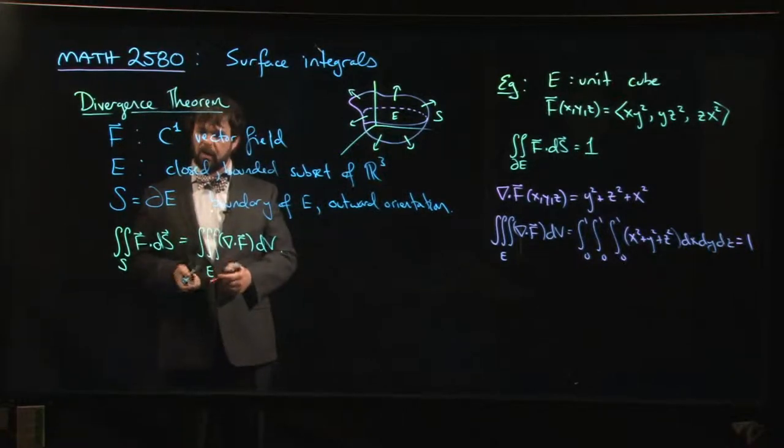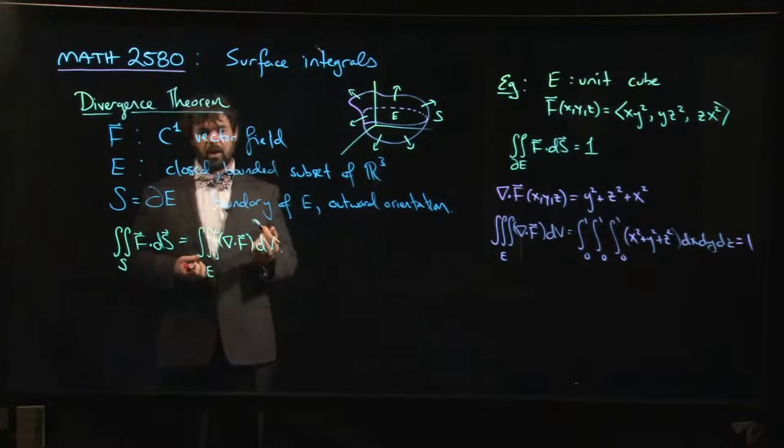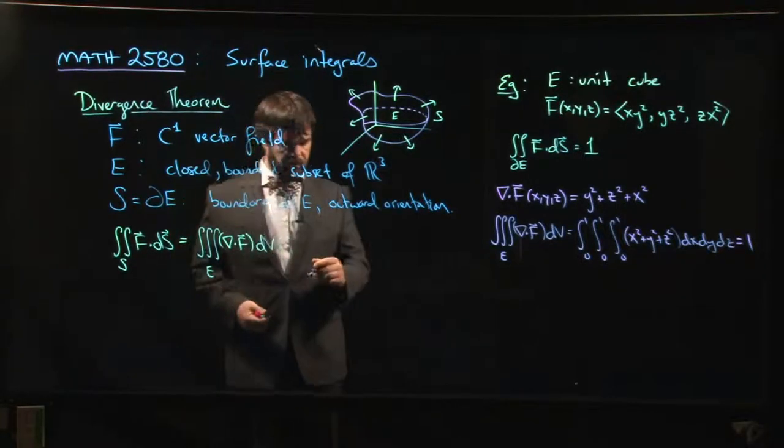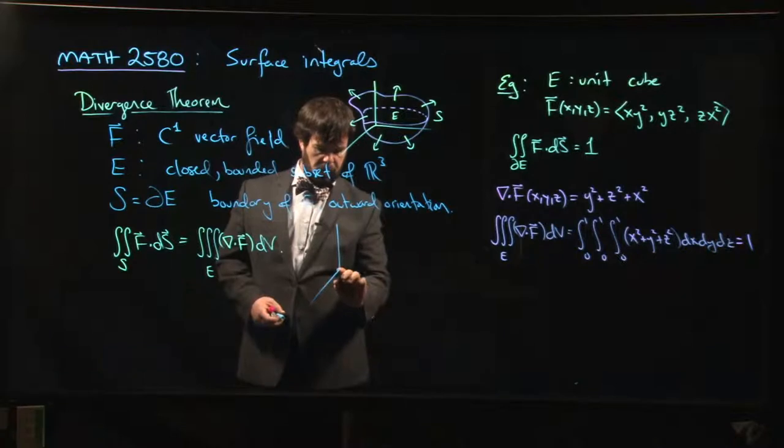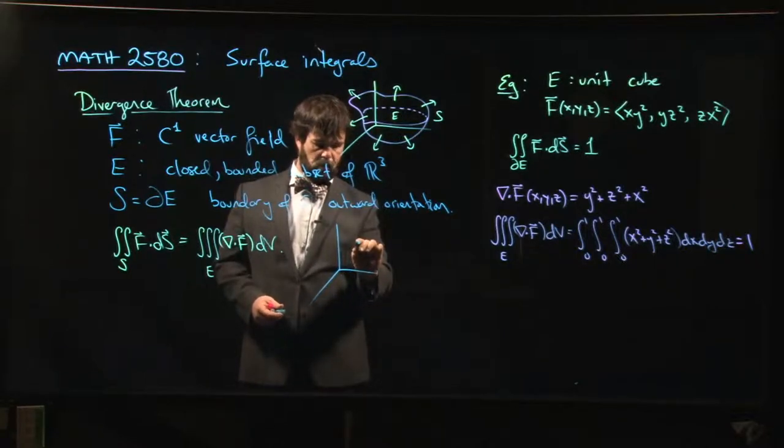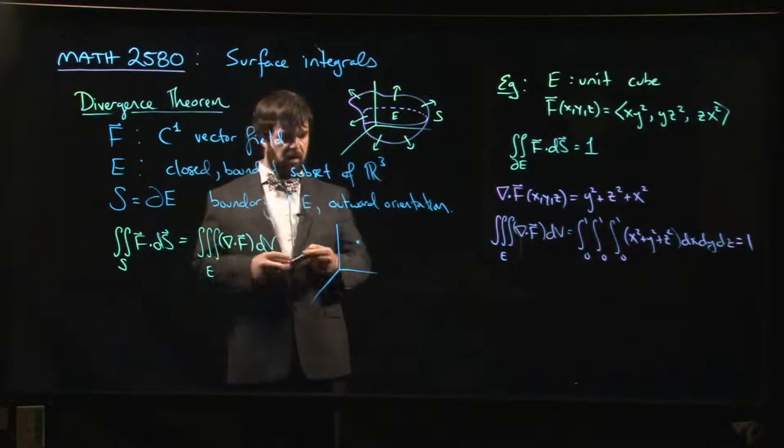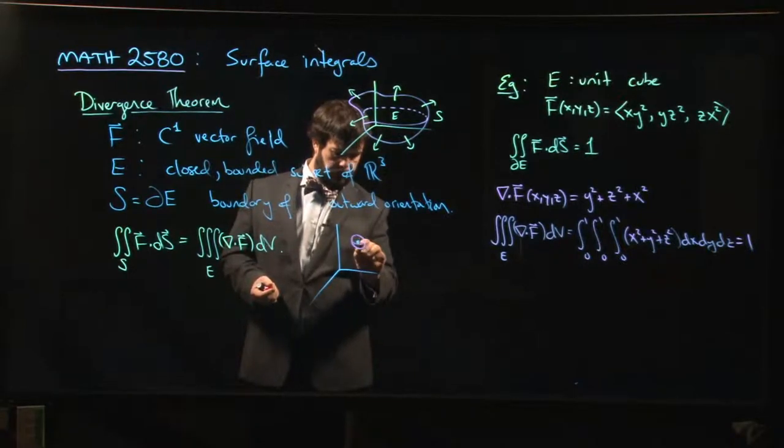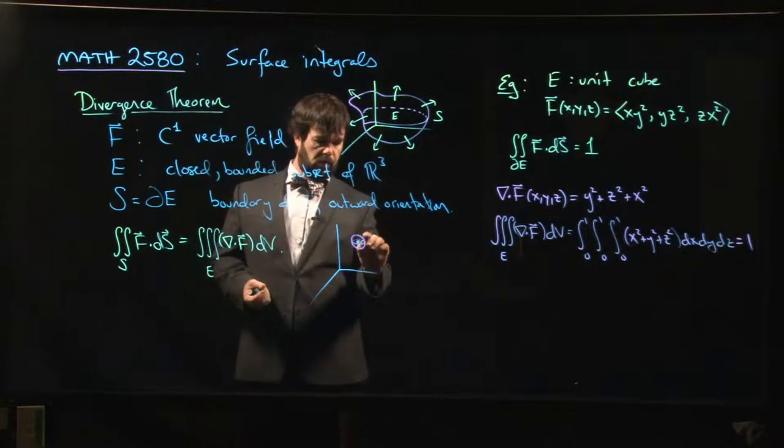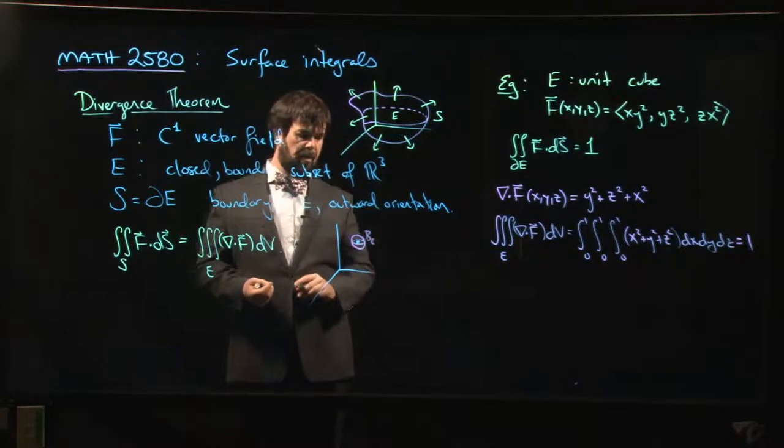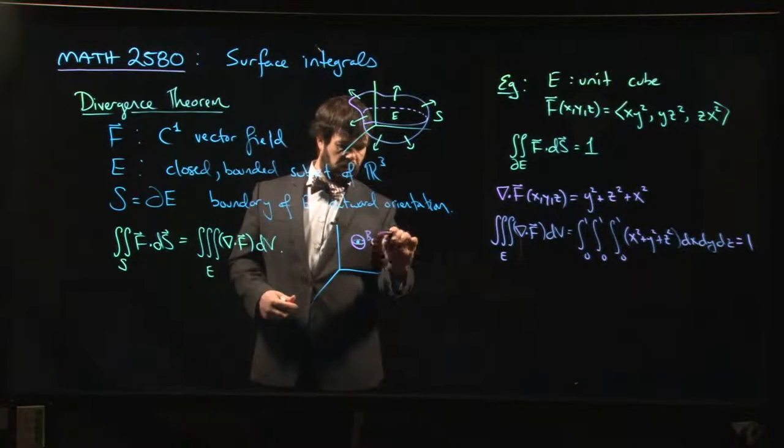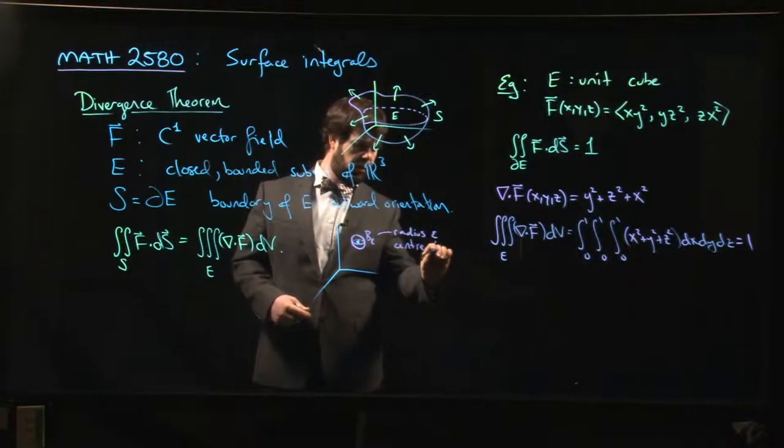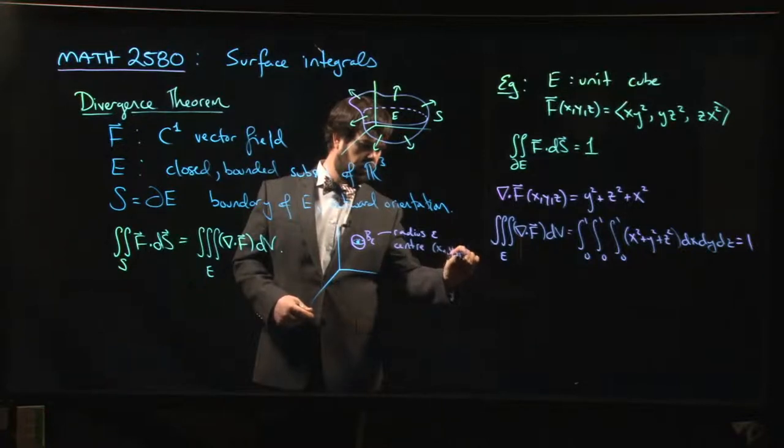Another thing that the divergence theorem does for you is it lets you actually understand what the divergence is telling you, because one of the things that you can do is you can look at the divergence theorem in the context where you have some point, okay? You have a point in space, and around that point, you do a little ball, right? So we're going to call this, like, maybe it's an epsilon ball, right? So this is something which has a radius of epsilon. It has a center at some point, x-naught, y-naught, z-naught.